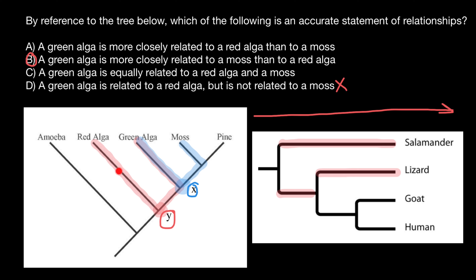As you see, we count three lines. And in this type we also count three lines. For example, if we want to find how goats and humans are related, we only count these two lines. Again, the vertical line here is just a point on this timeline.